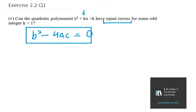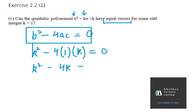In this case, b is k, so k² minus 4 times a, which is 1, the coefficient of x², times c, which is k. So we have k² - 4k = 0. Taking k common, we are left with k(k - 4) = 0.